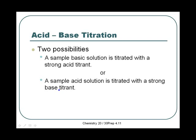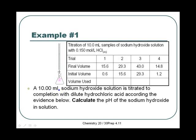We're only going to look at acid-base titrations, which means there are only two possibilities. One possibility is a base solution as our sample, titrated with a strong acid. The other is an acid solution titrated with a strong base. Those are the only two types we're going to look at, and it's really just straightforward stoichiometry with a bit of setup.